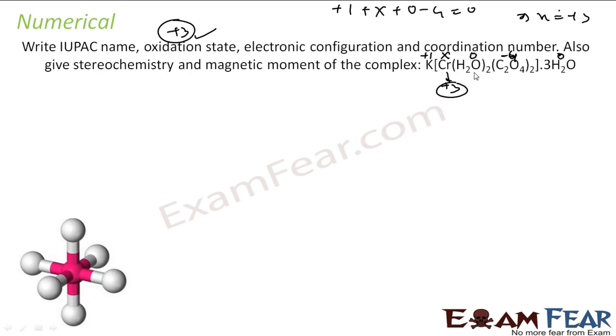Coordination number: water is bonded to two water molecules and two bidentate oxalate ligands. So 4 plus 2 gives 6. Coordination number is 6. This part is also done.